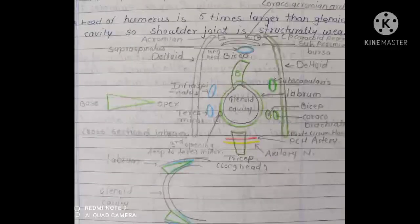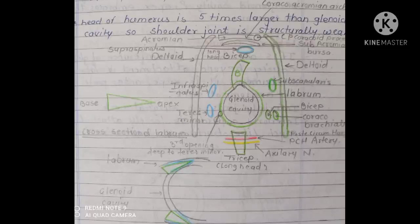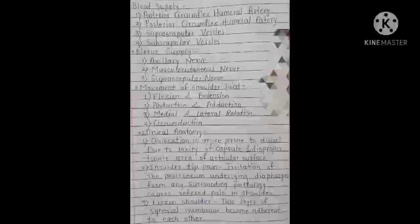Relations of the shoulder joint: superiorly — coracoacromial arch, supraspinatus, and deltoid; inferiorly — long head of triceps brachii, axillary nerve, and posterior circumflex humeral artery; anteriorly — subscapularis, coracobrachialis, short head of biceps brachii, and deltoid; posteriorly — infraspinatus, teres minor, and deltoid. Within the joint is the tendon of the long head of the biceps. Blood supply is from the anterior and posterior circumflex humeral arteries, suprascapular, and subscapular vessels.